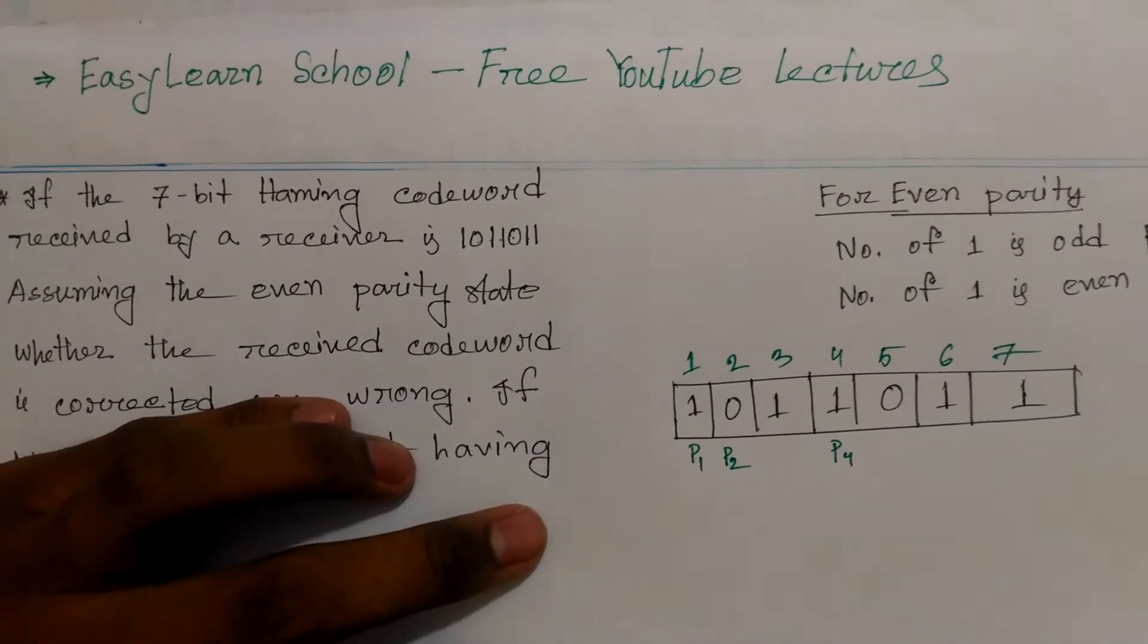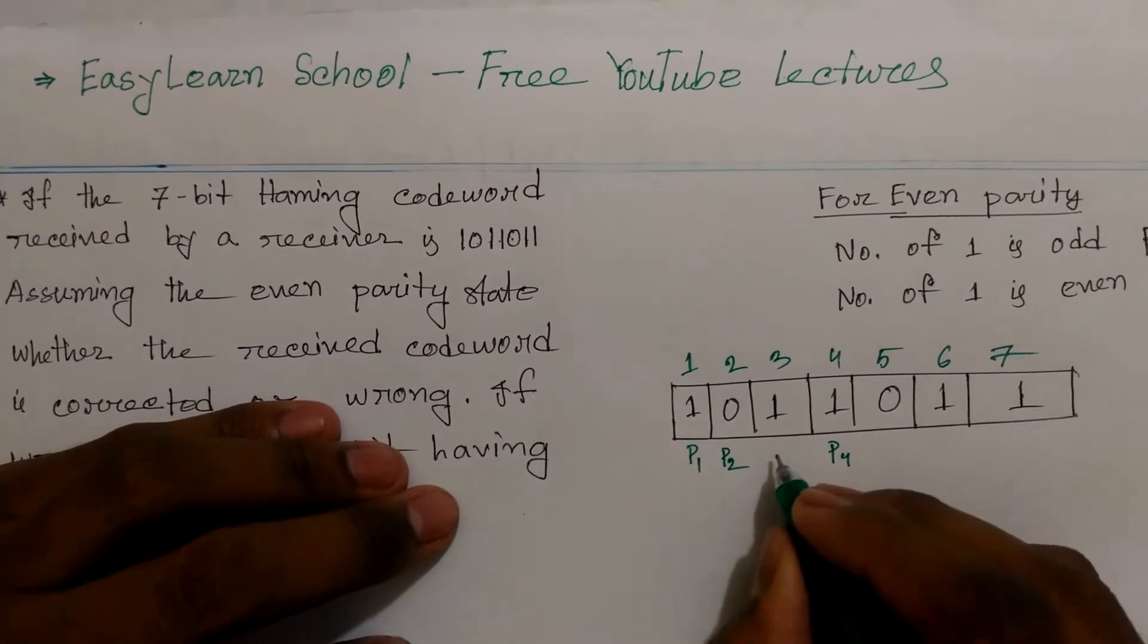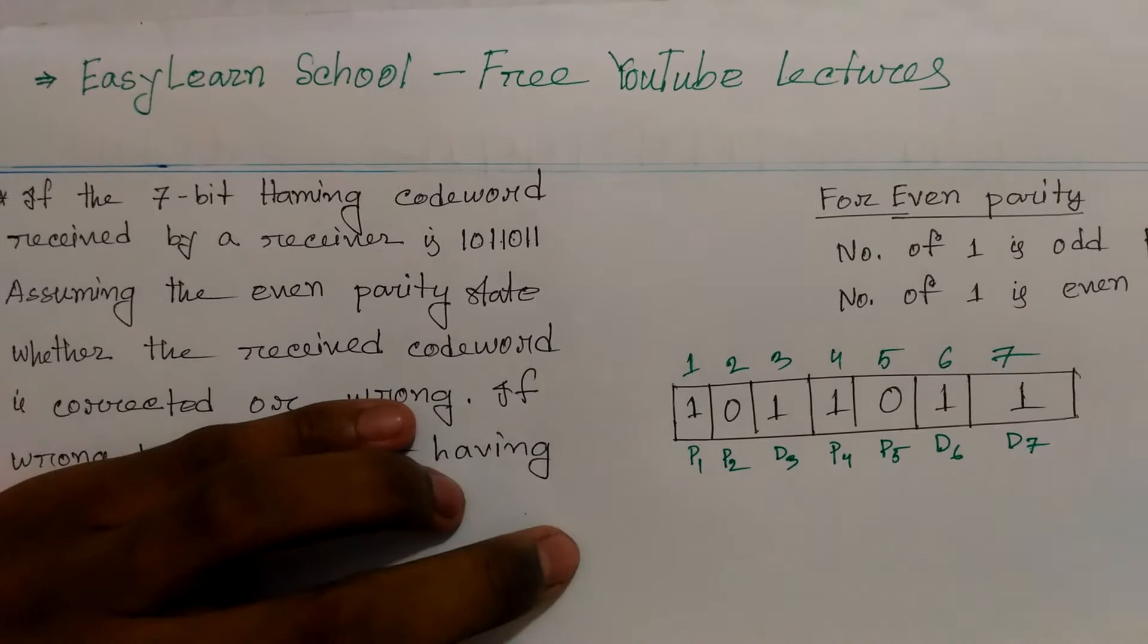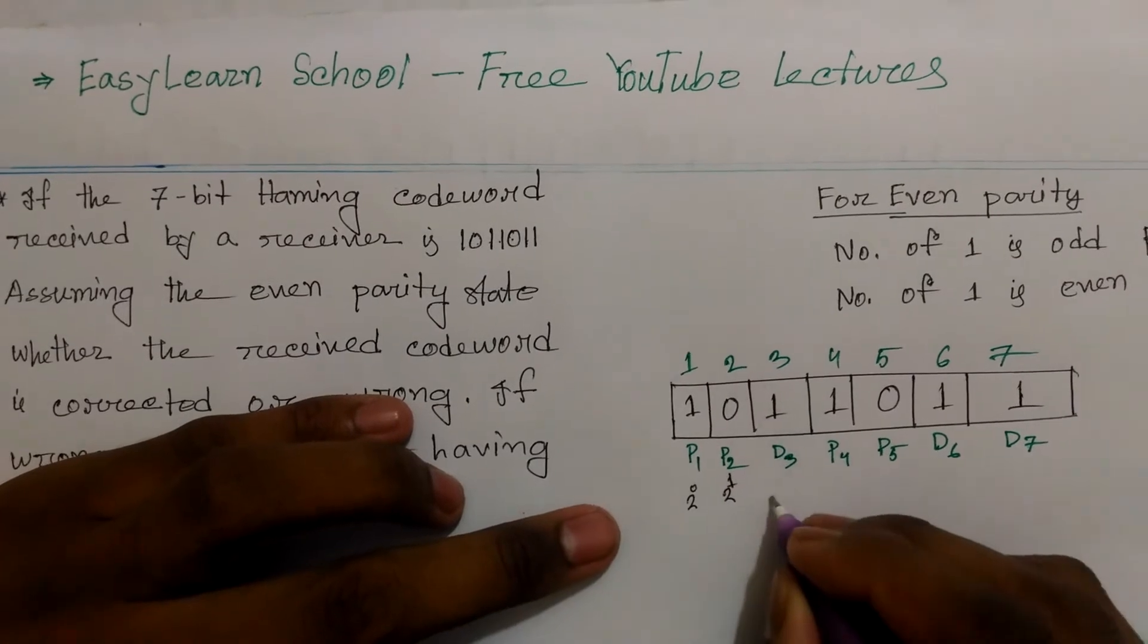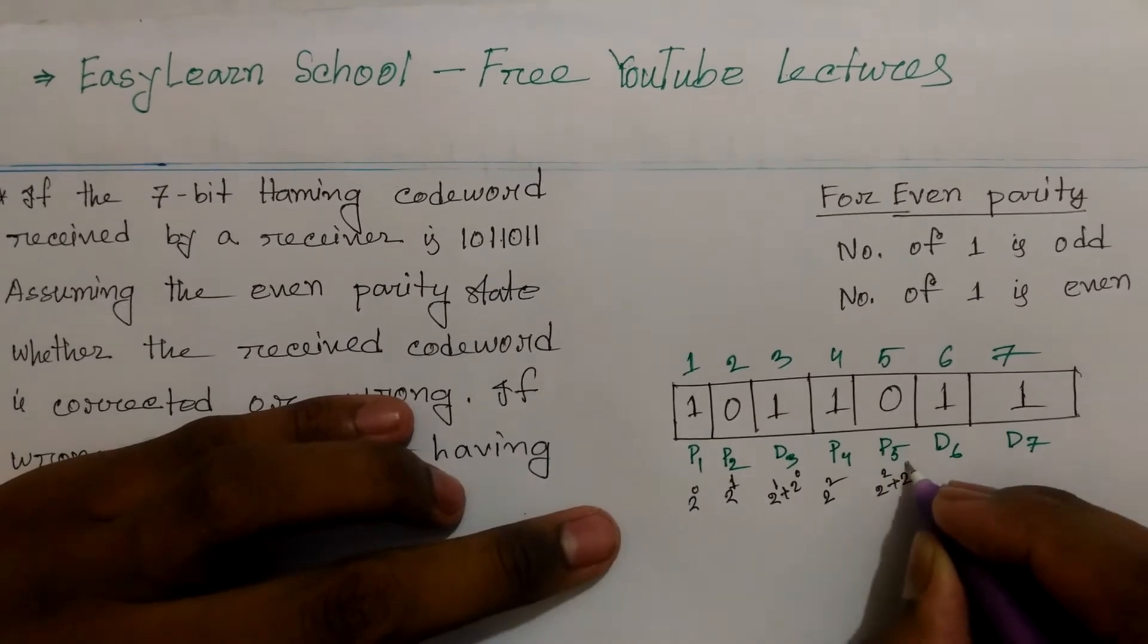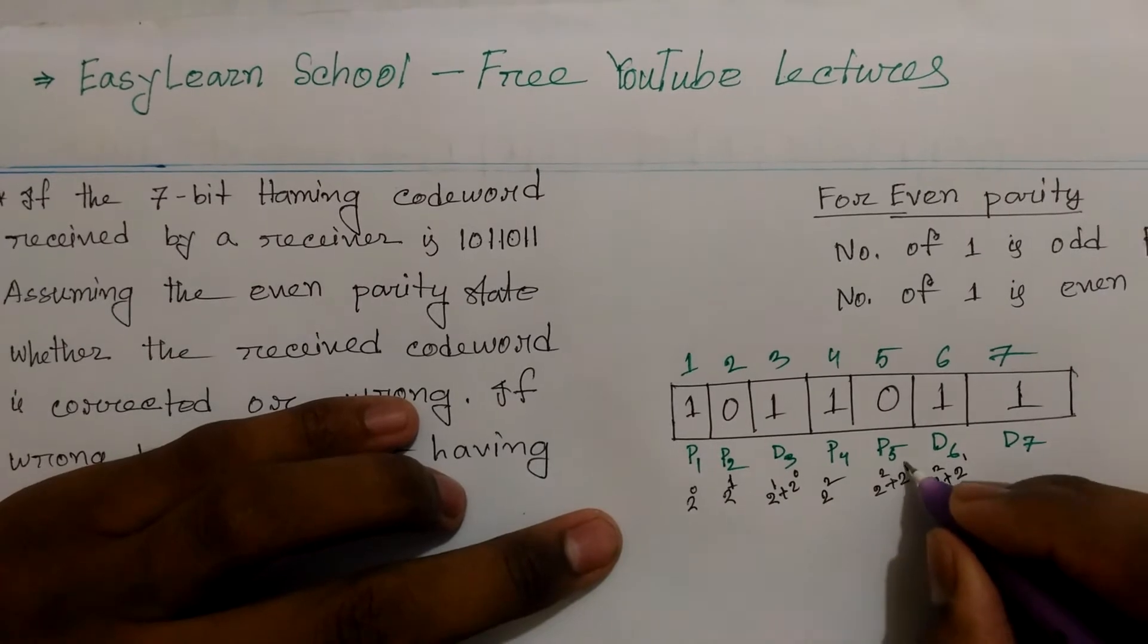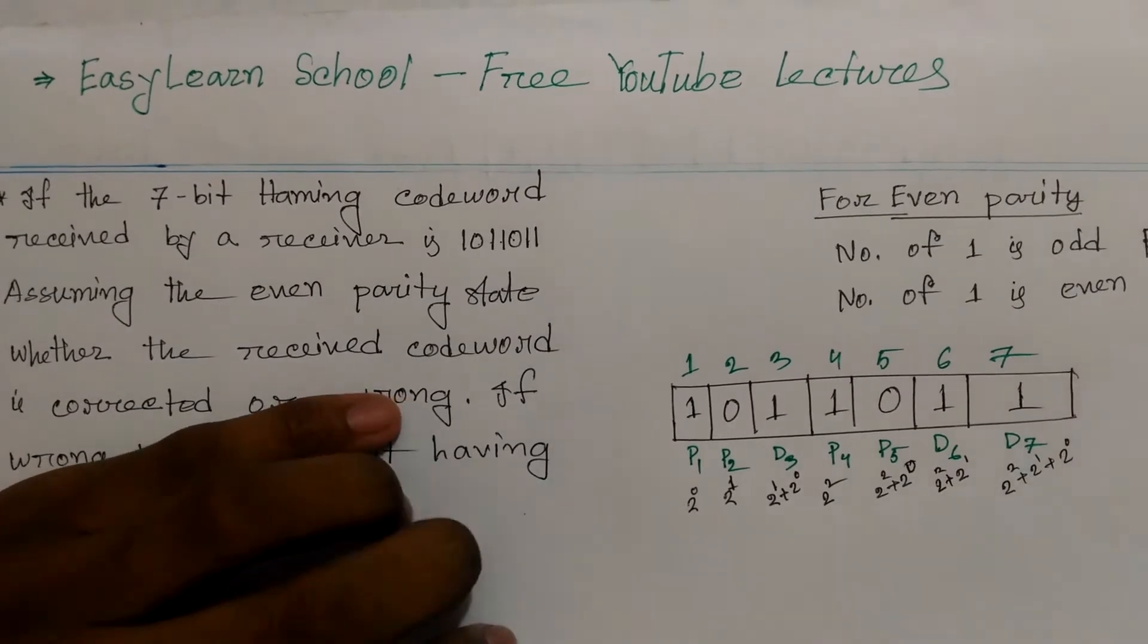Now for the data bits: D3, D5, D6, D7. Each position can be written as powers of 2: position 1 is 2^0, position 2 is 2^1, position 3 is 2^1+2^0, position 4 is 2^2, position 5 is 2^2+2^0, position 6 is 2^2+2^1, and position 7 is 2^2+2^1+2^0.